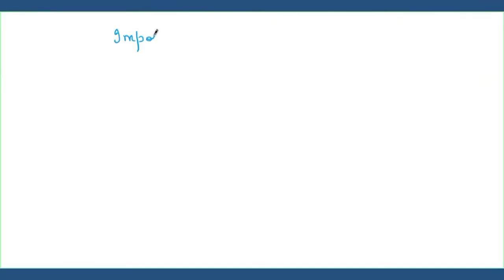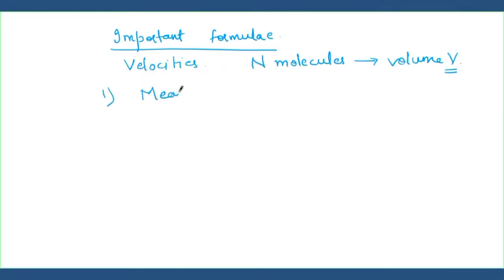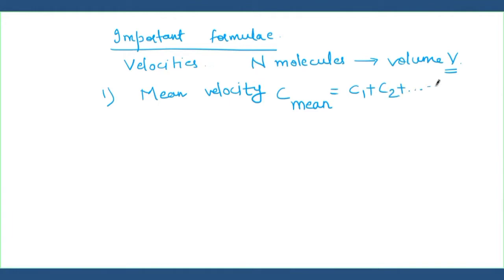The important formulas we have studied so far: first of all, types of velocities. We have n molecules in a fixed volume V. The first point is mean velocity, C_mean, which is calculated as C1 plus C2 and so on plus Cn divided by n — the same method as finding the mean.